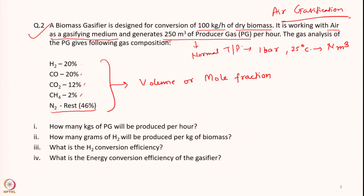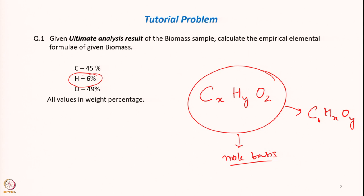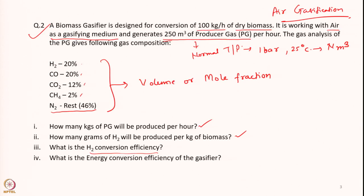The question asks: how many kg of producer gas will be produced per hour? How many grams of hydrogen will be produced per kg of biomass? And what is the hydrogen conversion efficiency? Hydrogen conversion efficiency means: if biomass has 6% hydrogen by mass, that is 60 grams of hydrogen per kg of biomass — out of those 60 grams, how much is converted into elemental H₂?